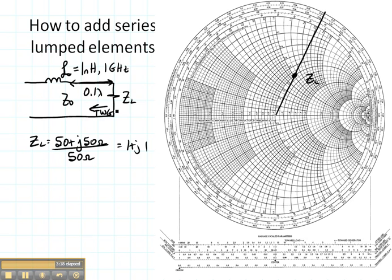Since we're going to be rotating towards the generator, I'm going to use this outside circle that tells me wavelengths toward the generator. And I'm going to be reading this outside axis. Looks like I'm at about 0.162 wavelengths. And I need to go 0.1 wavelengths. So I'm going to go to 0.262 wavelengths.